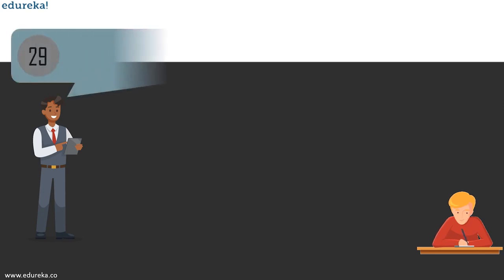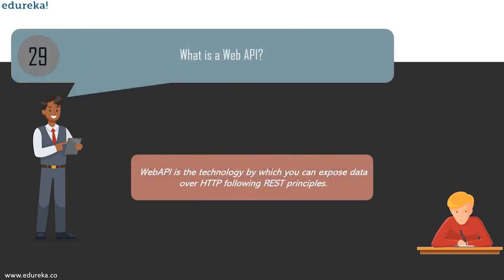The next question is: what is Web API? HTTP is the most commonly used protocol, and the browser was the most preferred client for consuming data over HTTP. But as years passed, client variety expanded — we demand to consume data over HTTP from clients like mobile, JavaScript, and Windows applications. For satisfying this broad range of clients, REST was the proposed approach. Web API is a technology by which you can expose data over HTTP following REST principles.